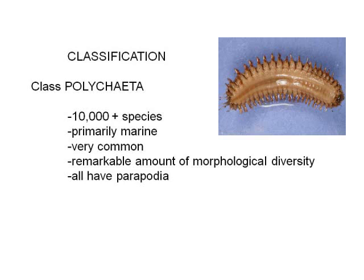The first class of annelids that we'll look at are the polychaetes, which are the largest class by a pretty good margin with over 10,000 species. They're found in both fresh and saltwater, but the majority of them are marine where they are extremely common and very diverse.